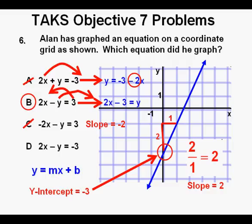But just to be sure, we check out our remaining answers C and D. C is wrong because its slope is negative 2. And for answer D, it's wrong because its y-intercept is 3 and not negative 3.